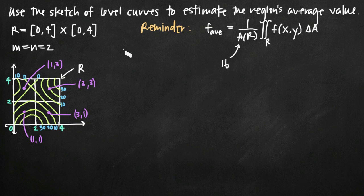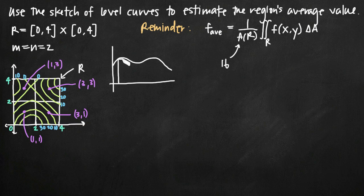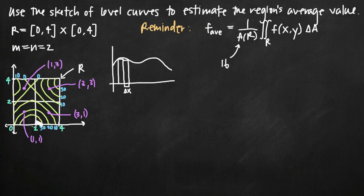In two-dimensional space we used delta x as the width of each rectangle, but now in three-dimensional space we have to account for the change in area — both the change in x and the change in y. The change in x is 2 and the change in y is 2, so the area of each square is 2 times 2 equals 4. We call this delta A, the change in area, and it equals 4.